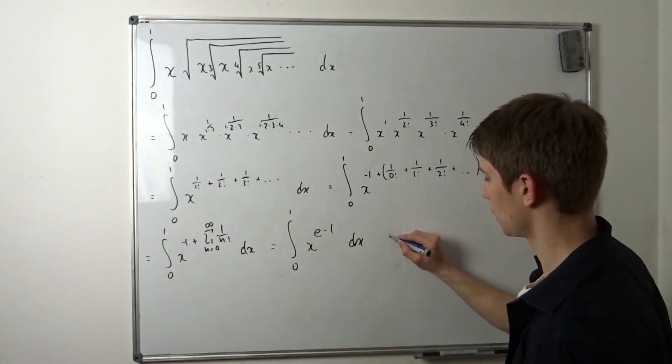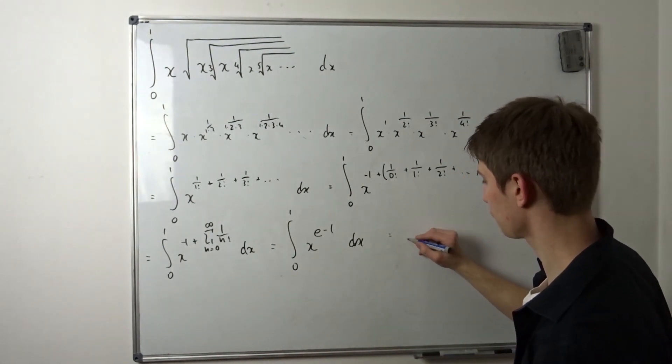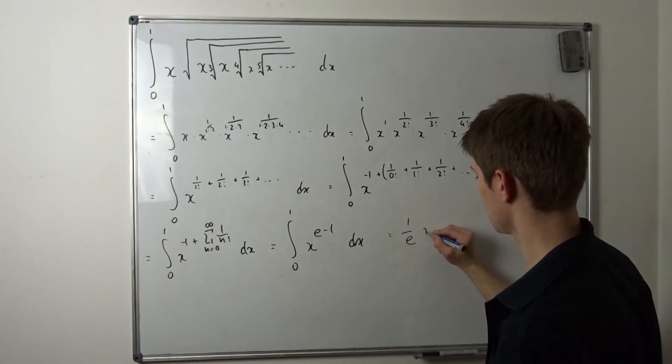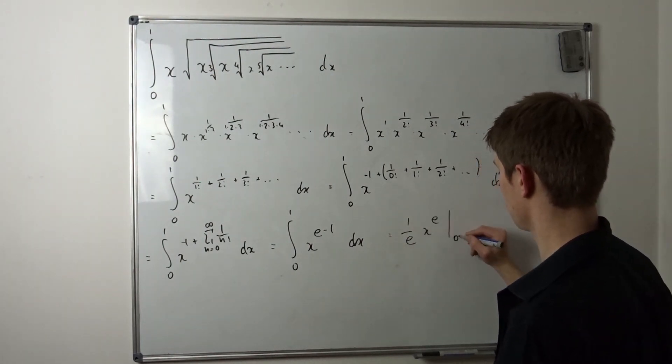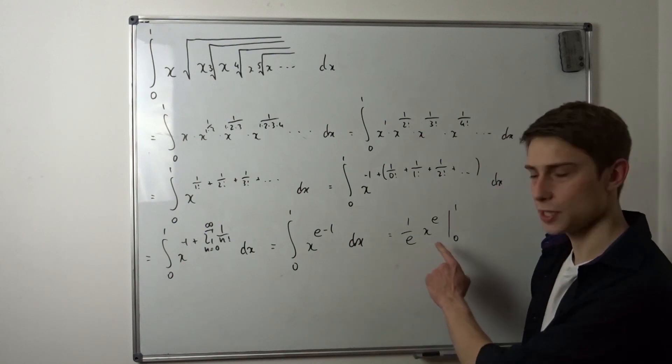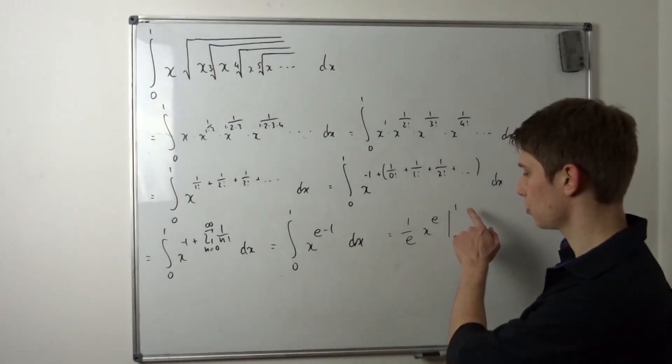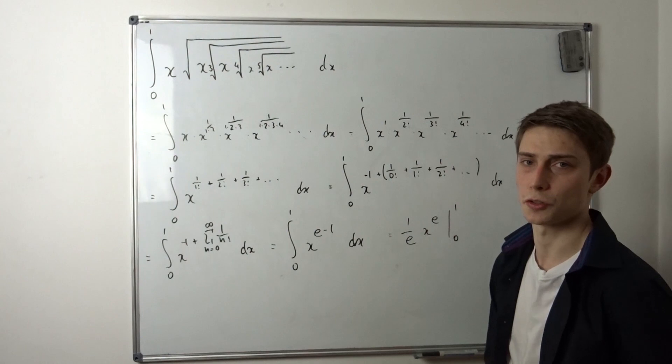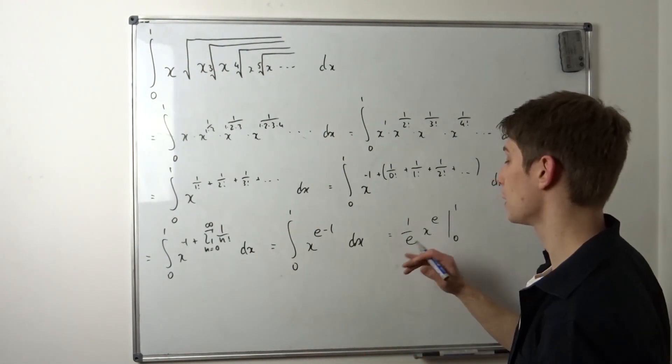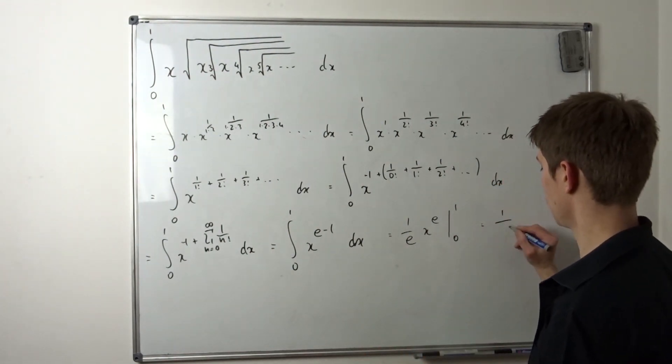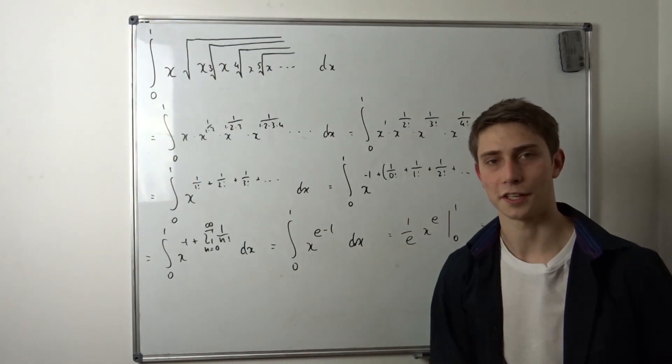Okay, so now this is just one over e times x to the e power from zero to one. And if we plug in zero, that would just become zero. And if we plug one in, so one to the e power, that's just one. So our final answer is one over e, and we're done.